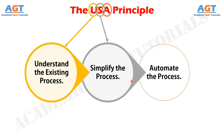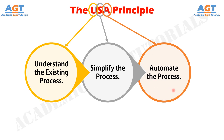Step 3: Automate the process. Once the process has been reduced to its simplest form, then automation can be considered. The possible forms of automation include those listed in the 10 strategies discussed in the following section.